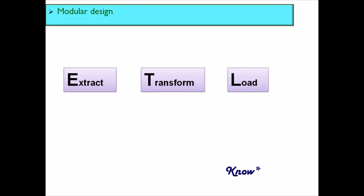Your Extract job would read data from your source system and put it into a staging area — a dataset, a temporary table, or a staging table in your database. The Transform job reads from that staging area, applies all business rules, transformations, derivations, calculations, aggregations, lookups, and joins, and produces a load-ready output dataset.